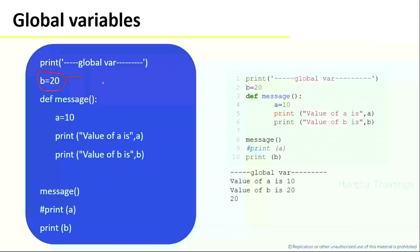Case two: if any variable is declared above the function definition, that is called as global. Global variables can be accessed within the function and outside the function also. Here, b equals 20 and it is global, while a is local to the block. Global variables can be accessed both within the block and outside the block.